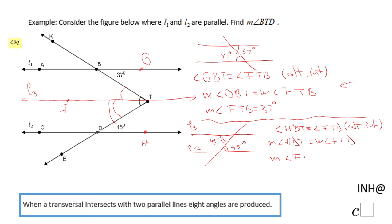We need to do one more step. If you remember, I said at the beginning that the measure of angle BTD, the one we need to find out, is nothing else than the sum of the measure of BTF and FTD.